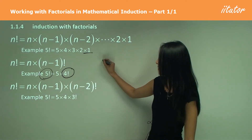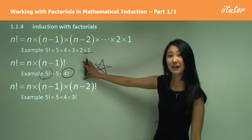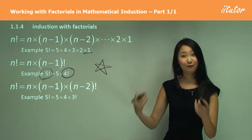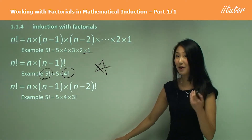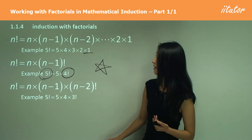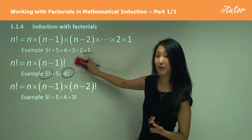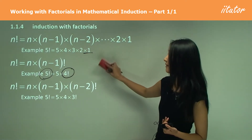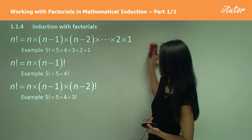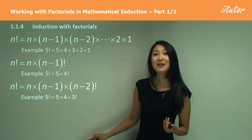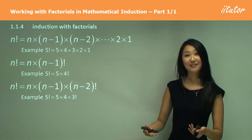This is the rule we're going to use most frequently for our induction with factorials. Remember: if you see something that's factorial being multiplied by one number greater than it, you can assume it becomes that one-number-greater factorial.